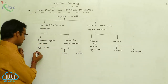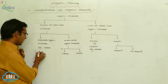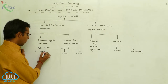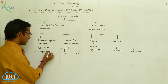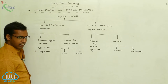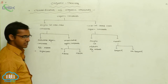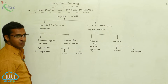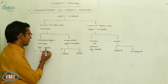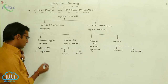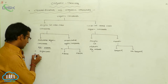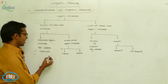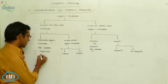Saturated compounds means these compounds contain only sigma bonds. If in an organic compound only sigma bonds are present, such compounds are called saturated organic compounds. Examples are alkanes.